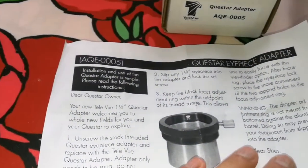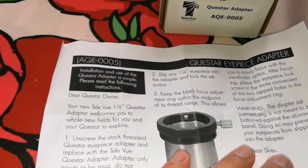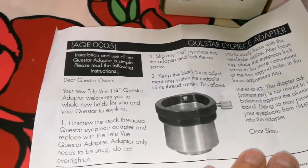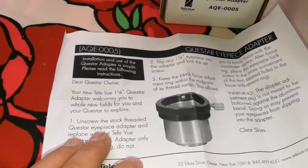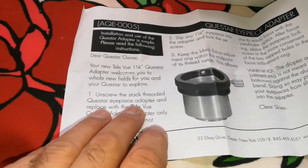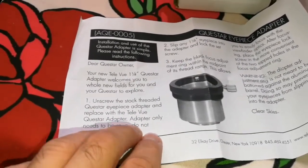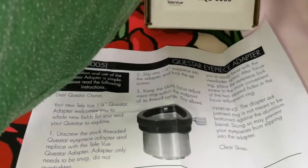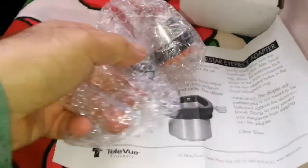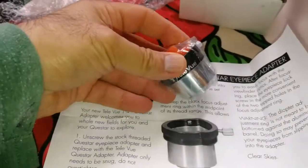Installation instructions. Questar eyepiece adapter AQE0005. So you have to unscrew the stock threaded Questar eyepiece adapter and replace it with the TeleVue adapter. Let's bring this adapter out and look how it is. You can see it's such a tiny part.